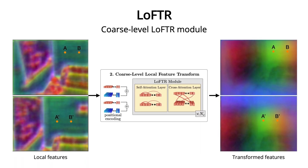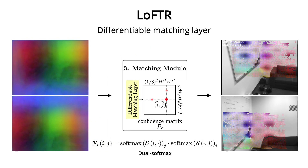Together with the positional encodings, position-dependent feature representations can be learned. As shown on the right, the color gradient on the transformed features indicates that the LOFTR module can transform local features that are originally close in the feature space to be distant from each other. This means that the transformed features depend not only on the local appearances of the input image, but also on their positions on the two images. The transformed coarse features can then be matched with the differentiable matching layer, and by selecting the matches with the highest confidence score, the dense coarse matches can be obtained.